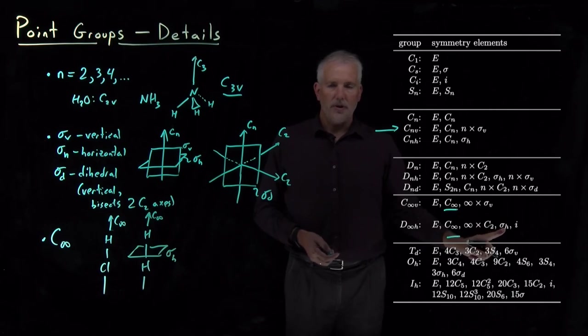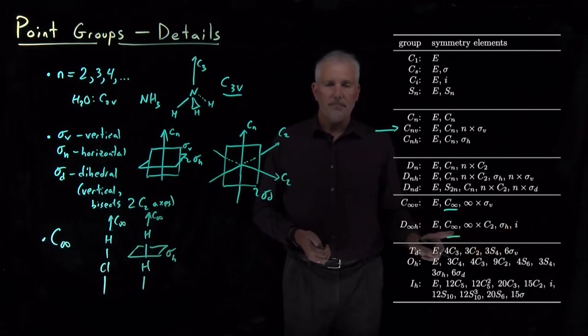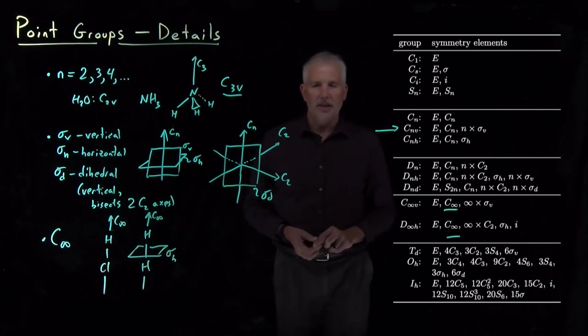Because it has a horizontal reflection plane and an inversion, then it falls in this D infinity H point group.